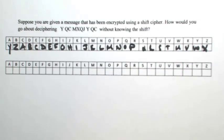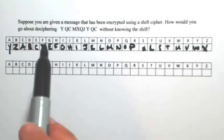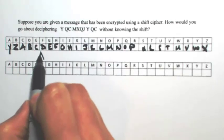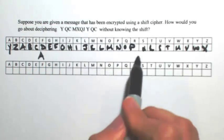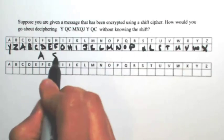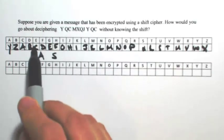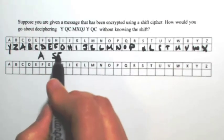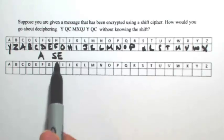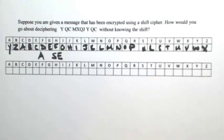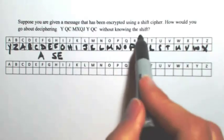Let's go through and see if it makes sense. So the Y was an A, the Q was an S, and the C was an E. Okay, so I don't think this is right because 'SE' is not an English word, so I don't think this is our cipher.